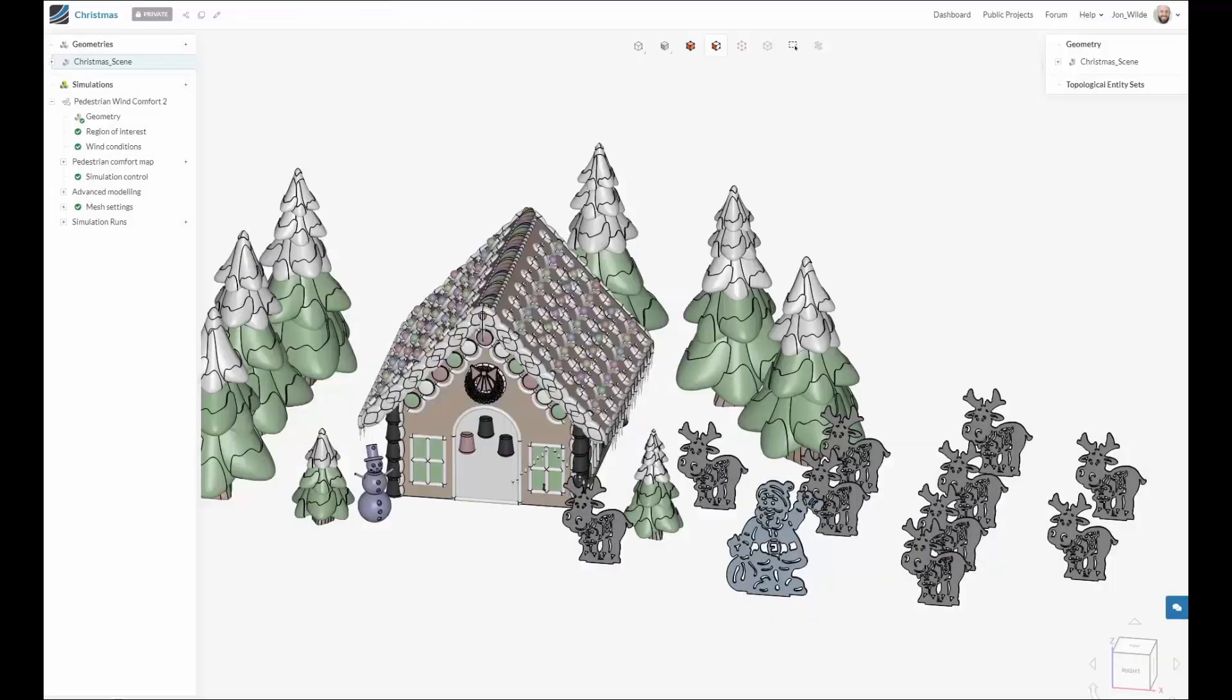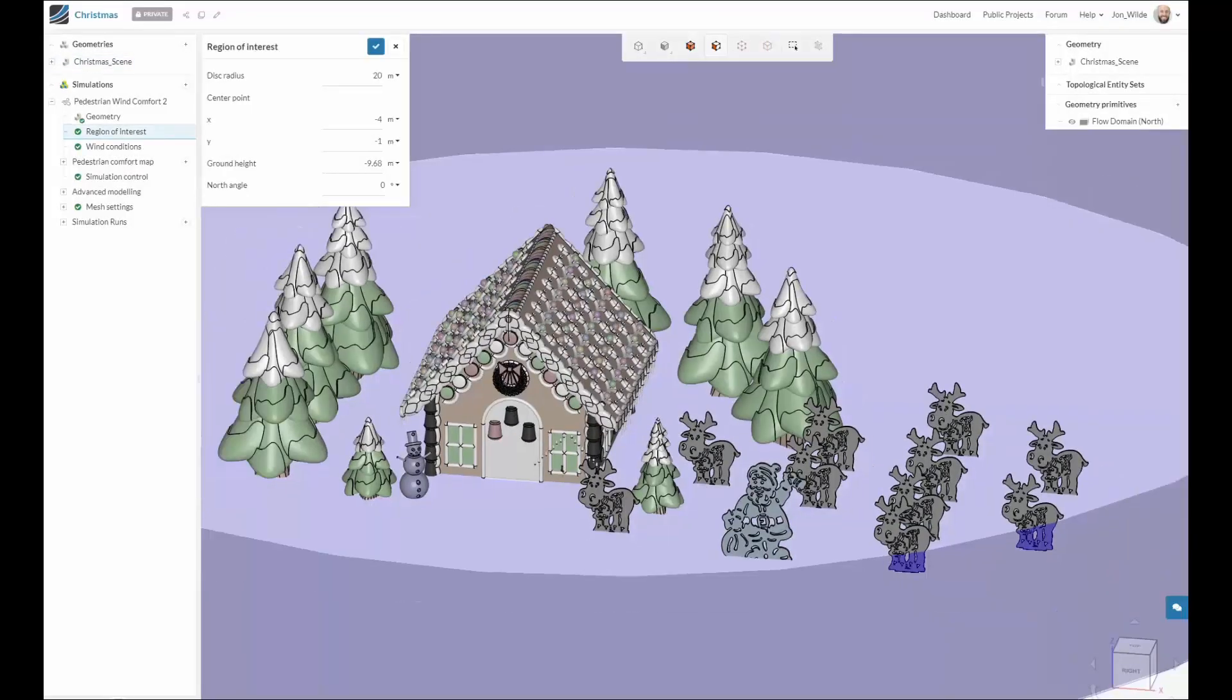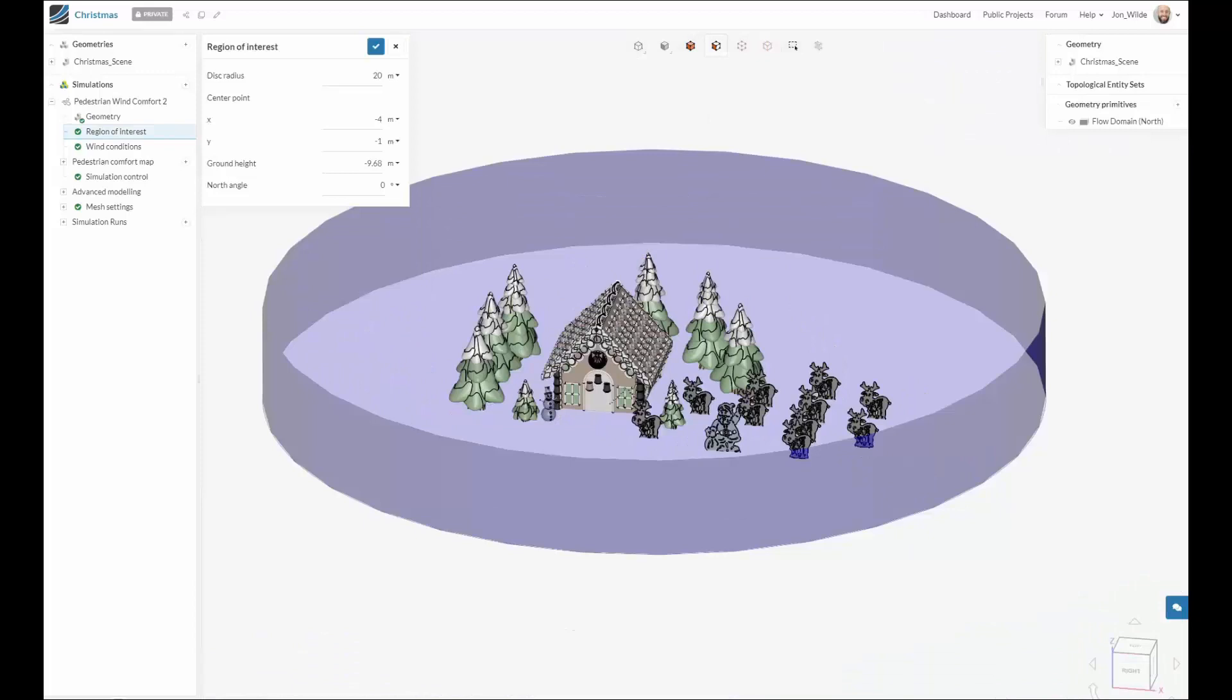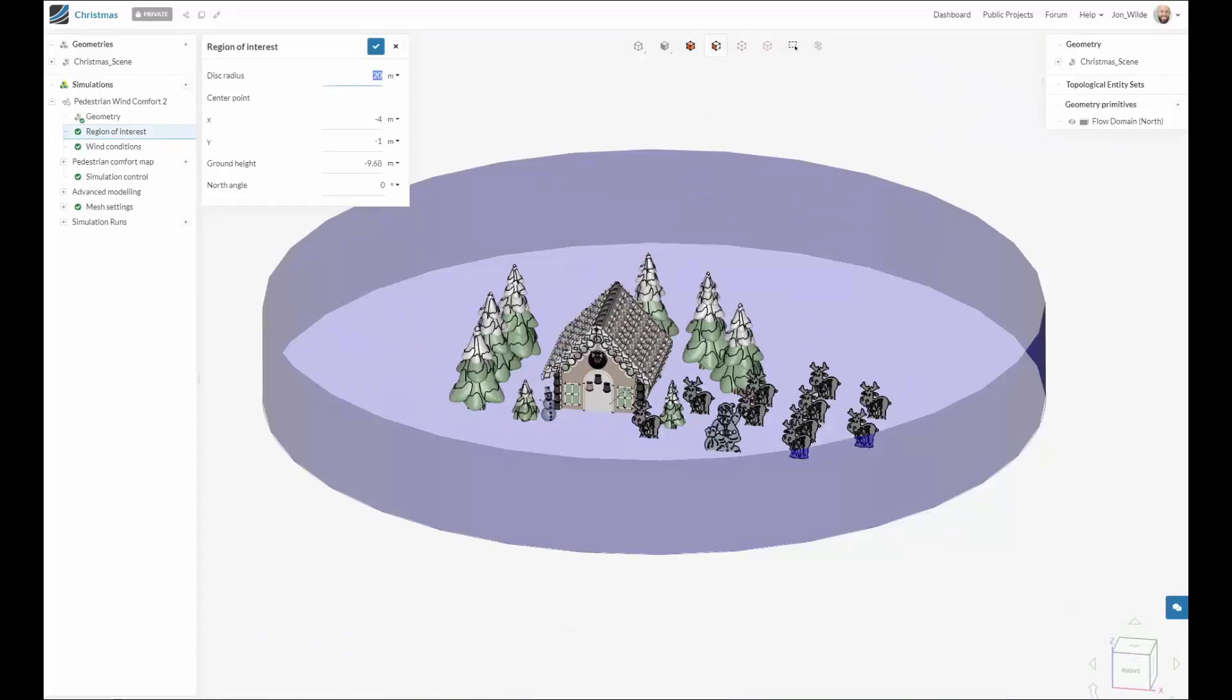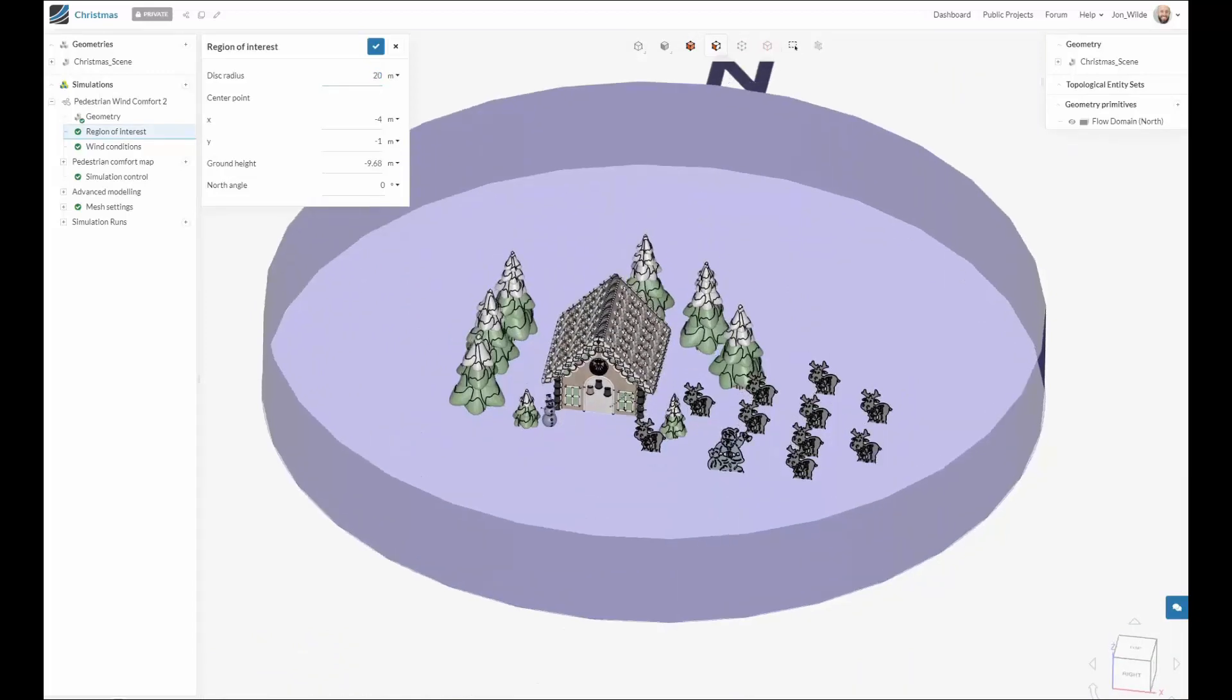The first step is to choose a region of interest. So here I have a 20 meter cylinder around the area where I wish to measure wind comfort.